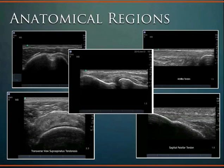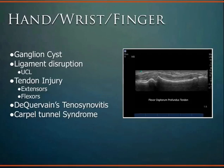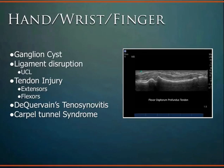Now with a sense of what tendons, bones, and muscles look like and their pathology, we'll look at specific anatomical regions in clinical context. Hand, wrist, and finger is an area used a lot — very superficial with great visible anatomy. Common diagnoses include ganglion cysts, ligamentous disruption (specifically the ulnar collateral ligament on the thumb at the MCP joint, where dynamic imaging is very useful), tendon injuries — extensor or flexor tendons, de Quervain's tenosynovitis, a very common clinic complaint easily visualized. Carpal tunnel is also increasingly imaged for diagnosis and ultrasound-guided injections.